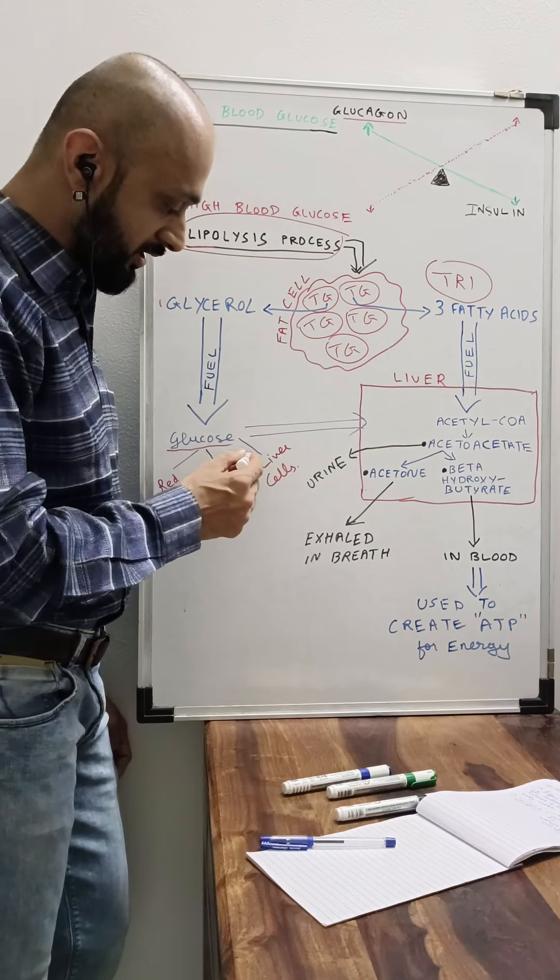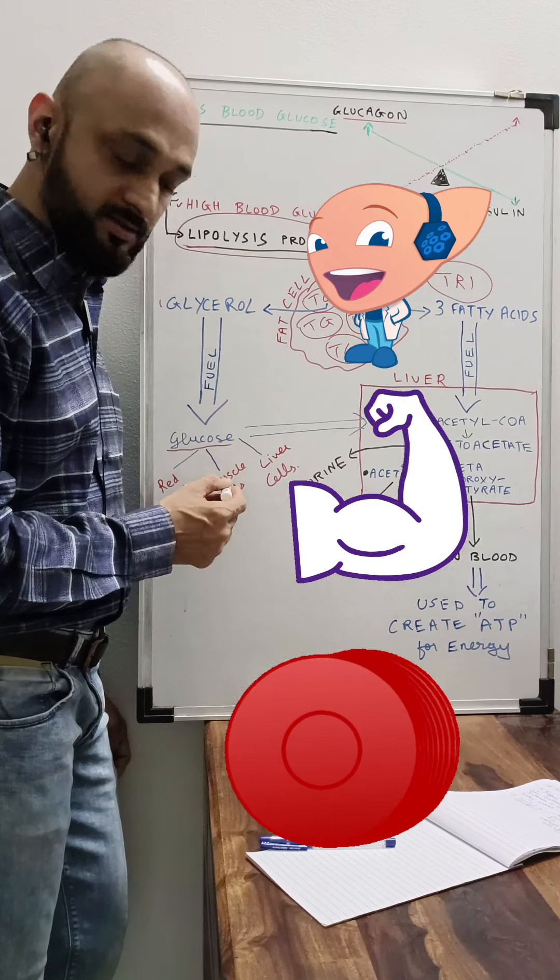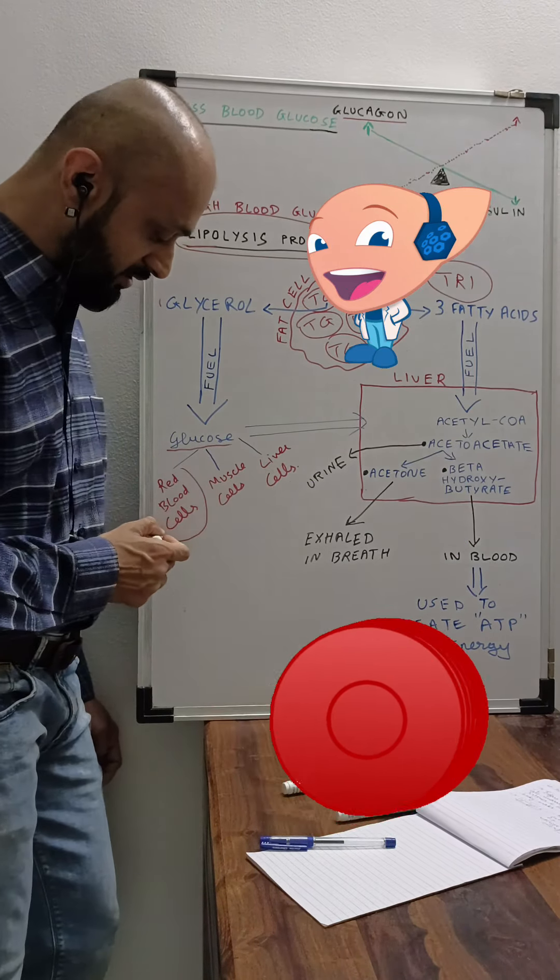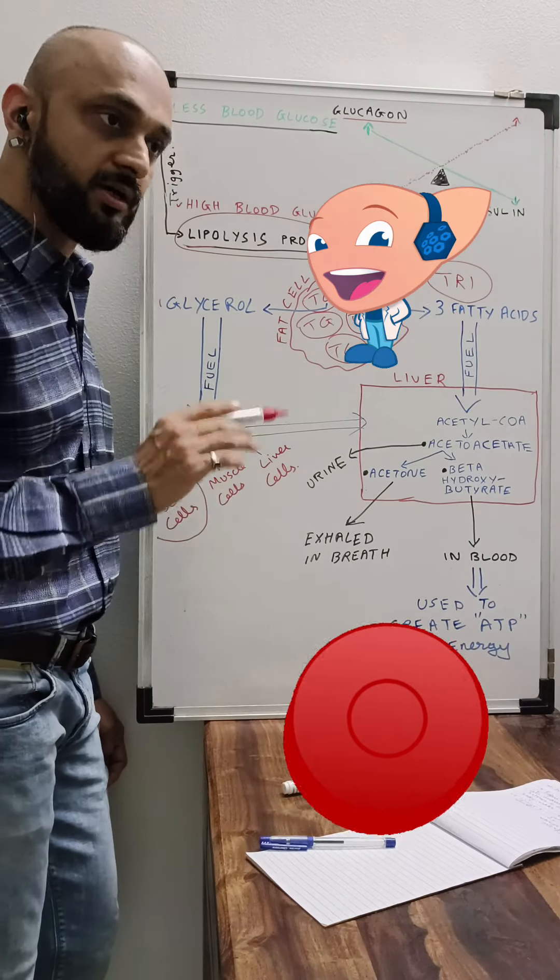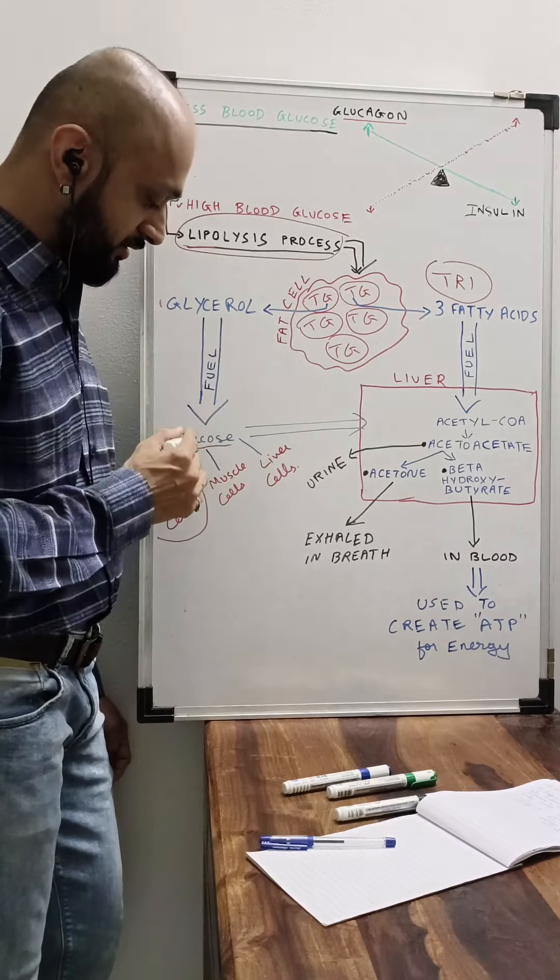This glucose, as the body's normal process, will be given to the liver, it will be given to the muscle cells, and it will also be utilized for the red blood cells, because red blood cells compulsorily, mandatorily need glucose to work.